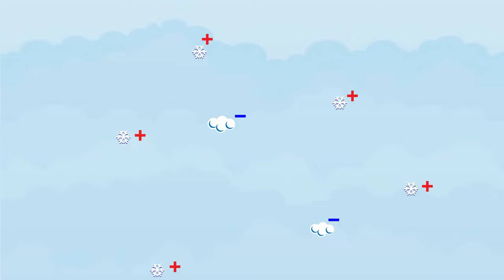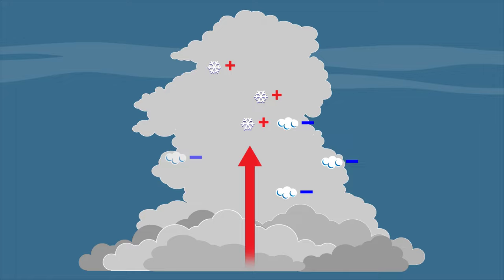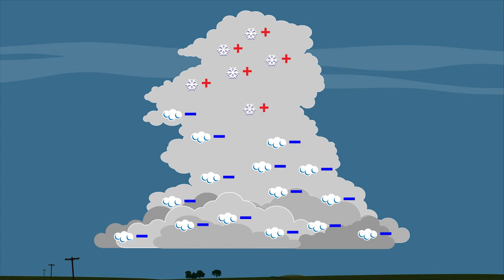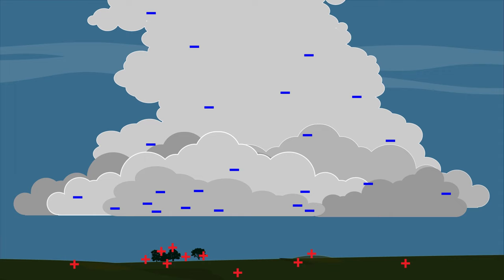Ice crystals are small and light. The updraft carries the positively charged ice crystals higher and higher into the cloud. The thunderstorm cloud is mostly negatively charged, which causes a mostly positive charge to form on the ground. When these opposite charges become strong enough, there is an electrical discharge, an energy release, in the form of lightning.